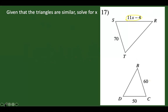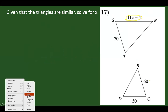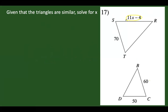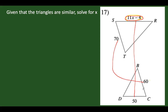We need to identify the corresponding parts based on the given. So 11x minus 4 corresponds to 50, and 70 corresponds to 60. We can check that using the shape of the triangle, or much better if the similarity statements were already given to easily identify the corresponding parts. In this problem, we could say that SR corresponds to DC and ST corresponds to 60.